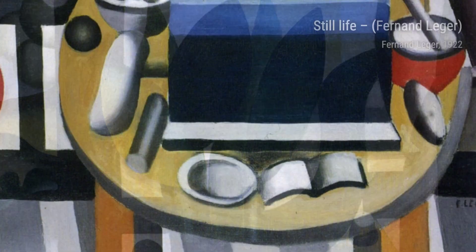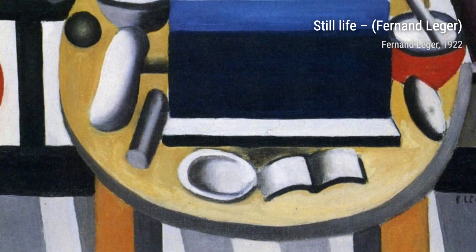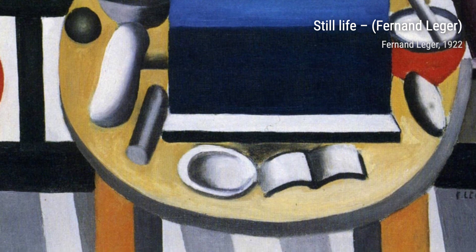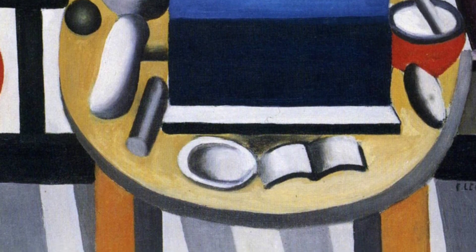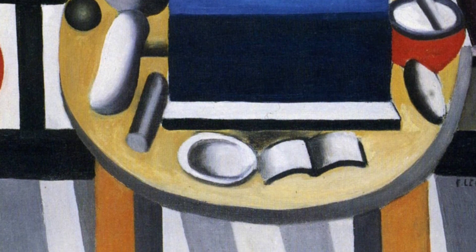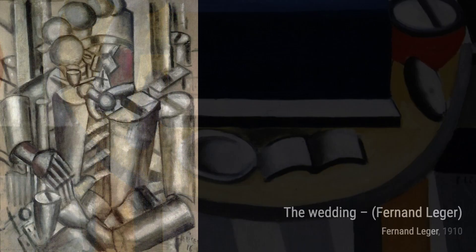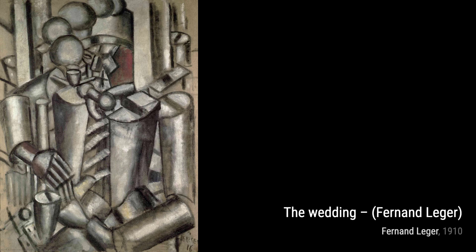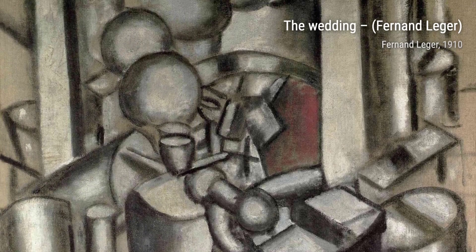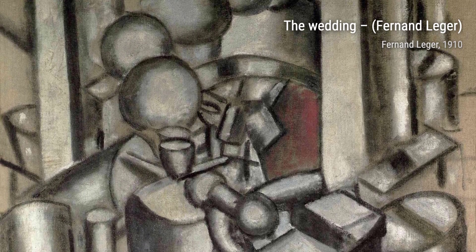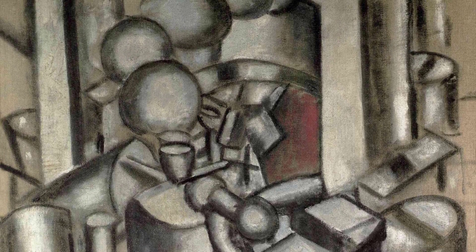Partie de Campagne takes us to the countryside, where Léger portrays a leisurely outdoor scene. The vibrant colors and playful shapes bring a sense of joy and liveliness to the painting. Moving on to Sacred Heart of Adencourt, Léger captures the iconic church in his unique style, with its simplified forms and bold colors.